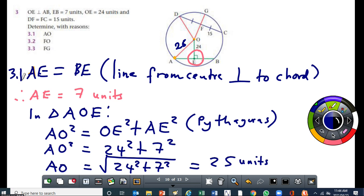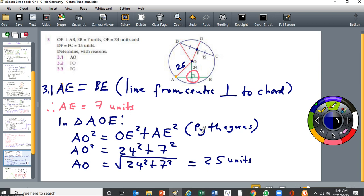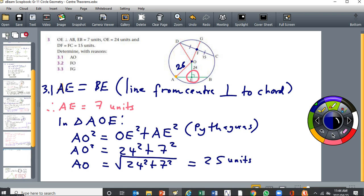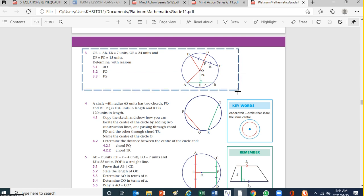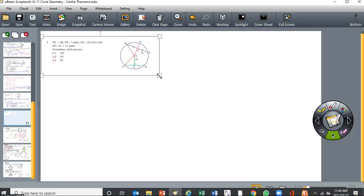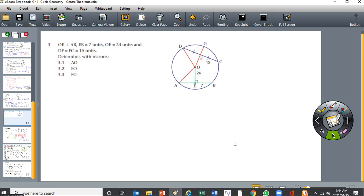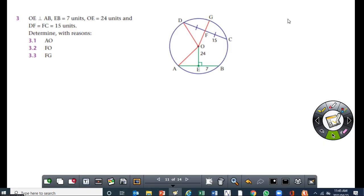For 3.2, you want the length of FO. If I want to calculate the length of FO, you need to be aware of the following: this is 25, it's a radius.